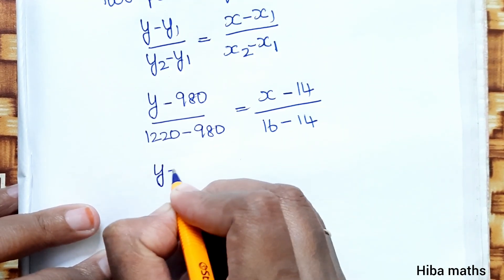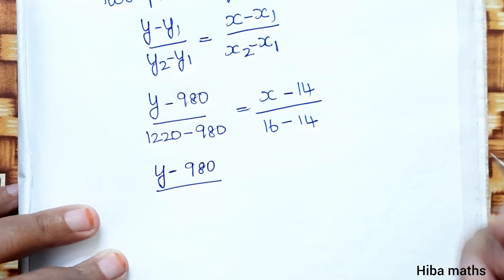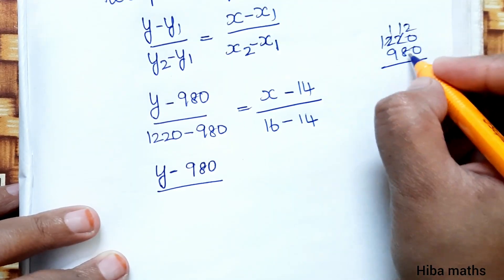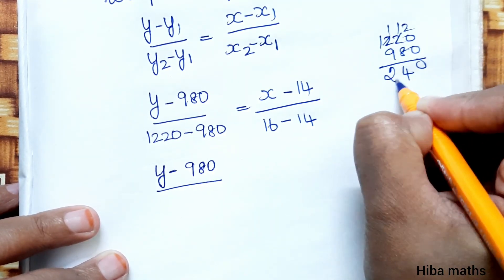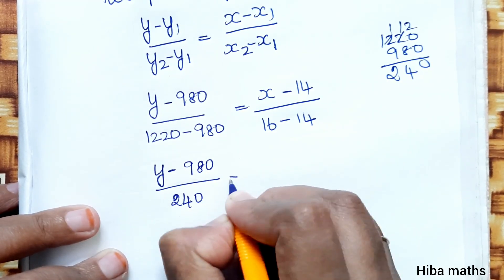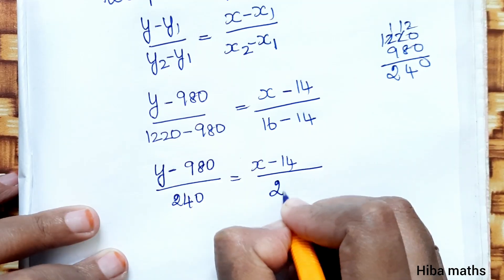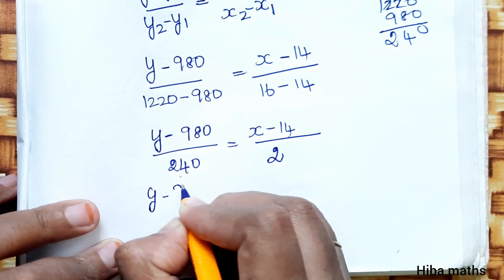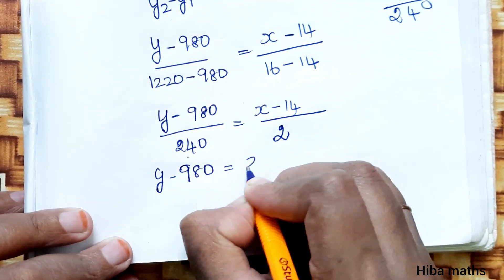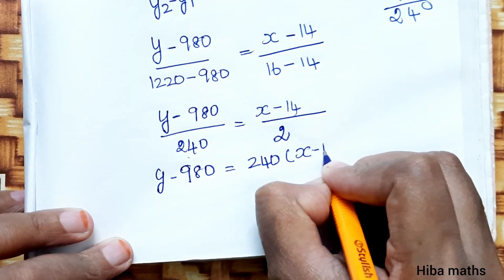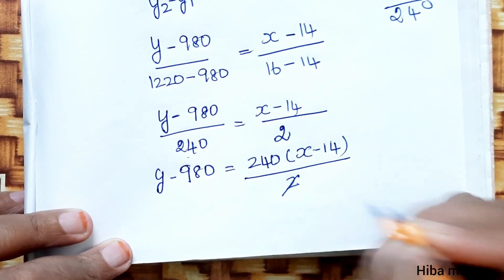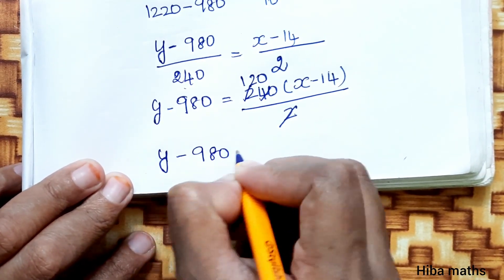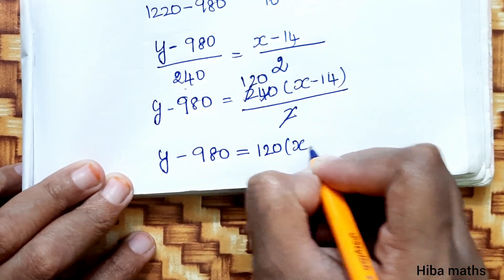Solving step by step: Y minus 980 divided by 240 equals X minus 14 divided by 2. Simplifying, 240 divided by 2 gives 120. So Y minus 980 is equal to 120 into (X minus 14).